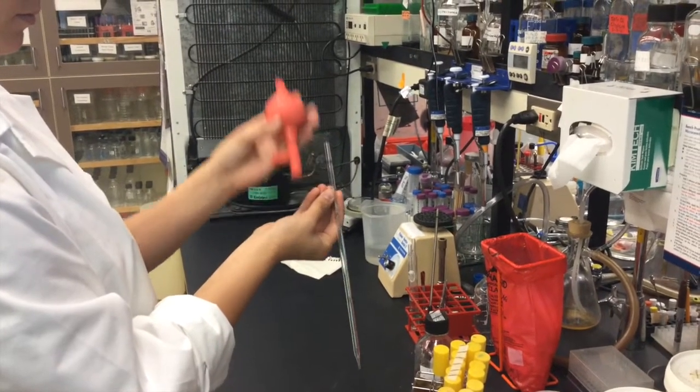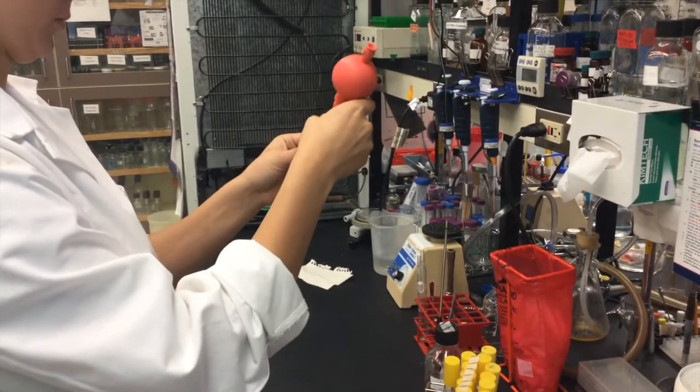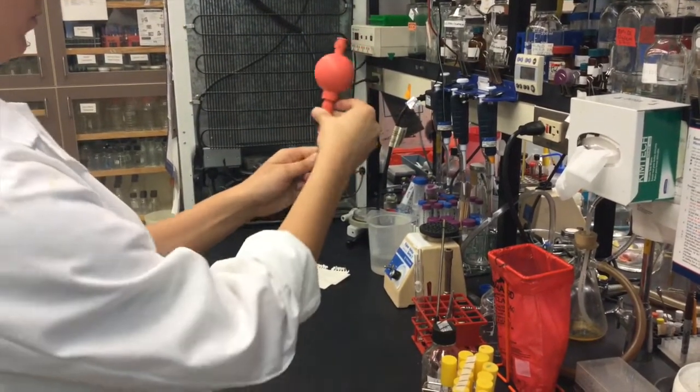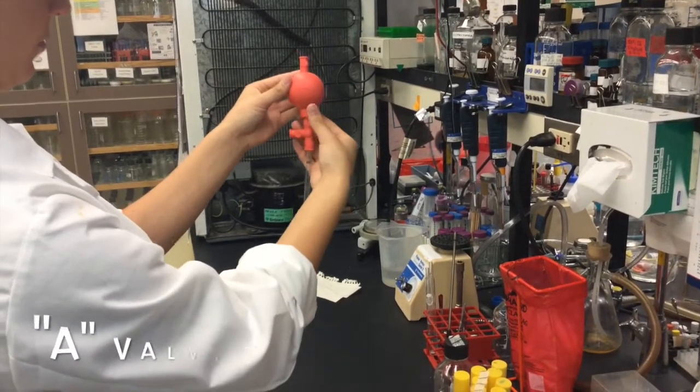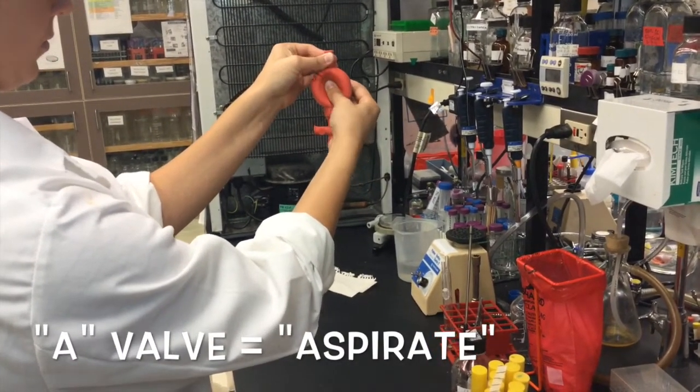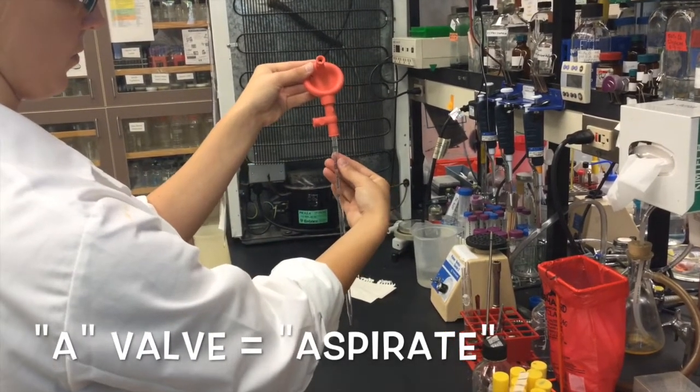In order to transfer this fluid, you must add the pipette bulb to the top of the pipette. Remove the air from the bulb by pressing the A valve and squeezing the bulb at the same time. This will create pressure so that we can suck up our liquid.